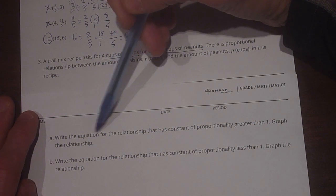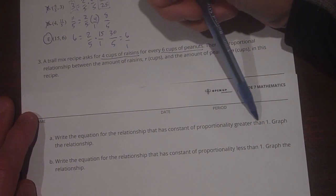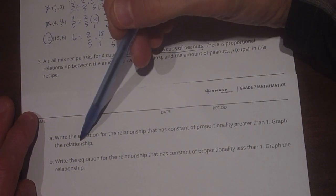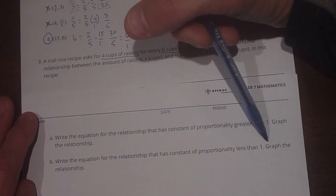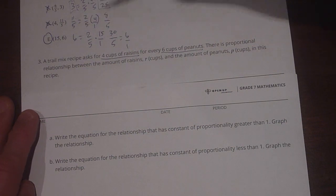A says write the equation for the relationship that has constant of proportionality greater than 1 and graph that relationship. Write the equation for the relationship that has a constant of proportionality less than 1 and graph that relationship.